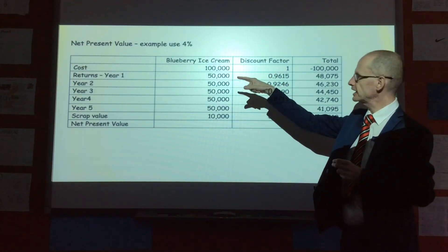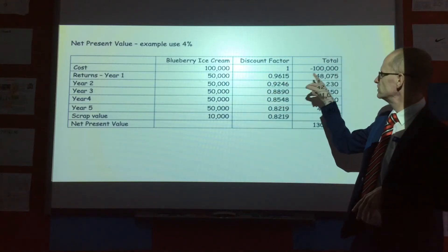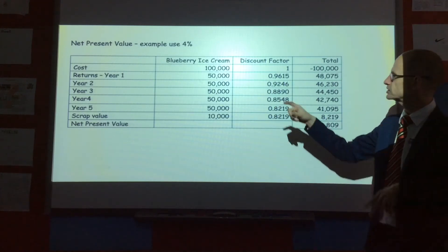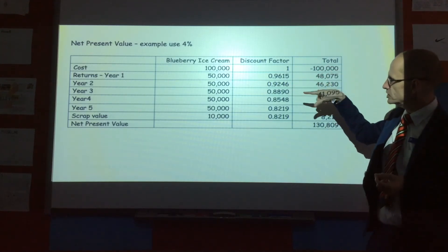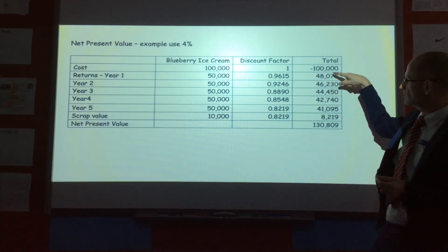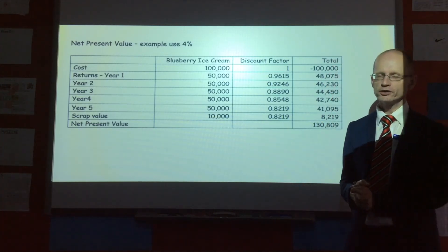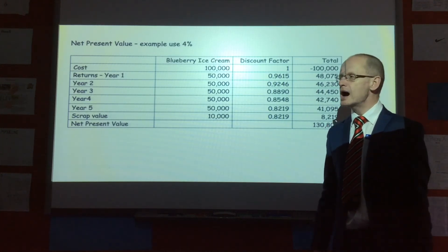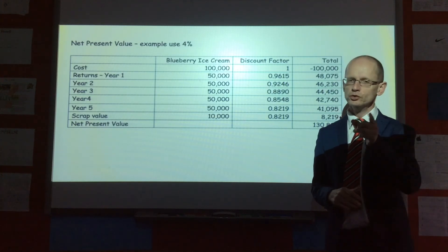Using this 4% discount factor — which you'll be given in the exam so you don't need to memorize it — what it's essentially saying is that after one year, $50,000 in returns is really worth $48,000; after five years, $50,000 is really worth $41,000. Money spent today has no discount factor, so $100,000 today times 1 equals minus $100,000. Then for each year's return, you multiply by the discount factor — for example, $50,000 times 0.9615 gives $48,075. Adding all the discounted returns together and subtracting the initial $100,000 gives a net present value of $130,809. This type of calculation is highly examinable — if it comes up, you can earn four to six marks very quickly, so make sure you understand it fully.